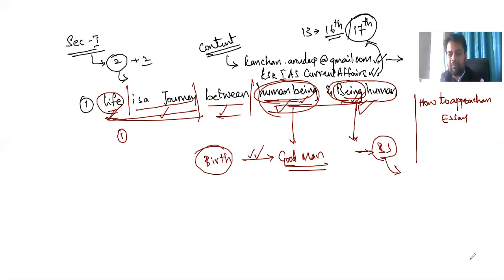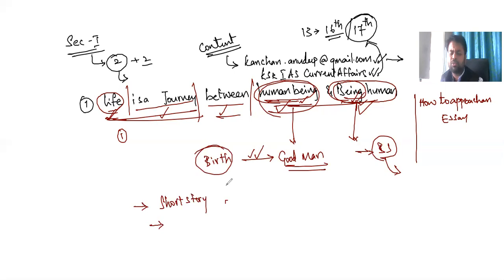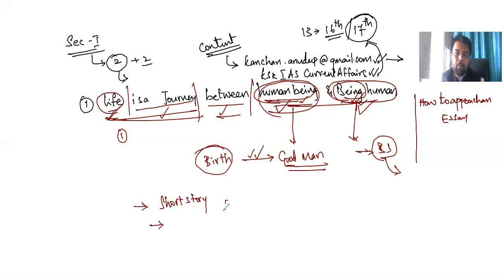Let me give you some content so that it will help you while writing this answer. Life is a journey between human being and being human — so you can start with an anecdote, a short story to start. You can conclude with some Sanskrit poet or a famous saying in Telugu. You can start with anything — that depends upon your approach to the essay and how you are dependent on your essay. Now let us look into the content.